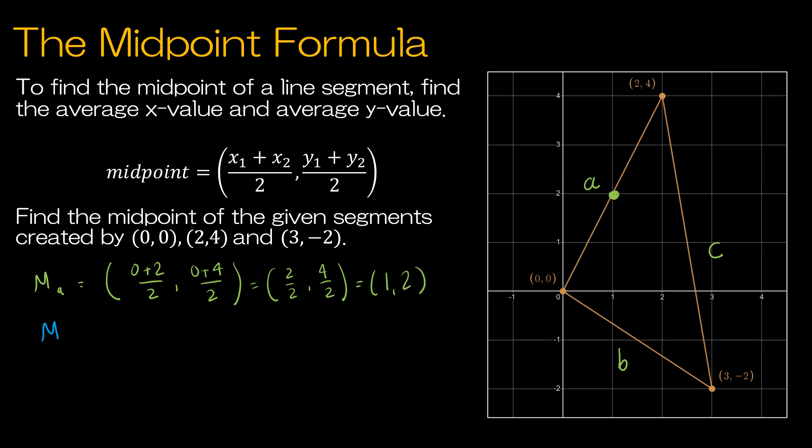Let's repeat for b. So for b, I'm going to take (0 + 3) / 2. I'm going to take (0 + (-2)) / 2. That gives me 3/2, -2/2, which of course is 3/2, -1. So 3/2 would be 1 and a half, and then -1. That would be my midpoint of b.